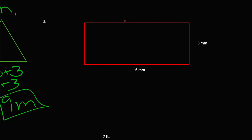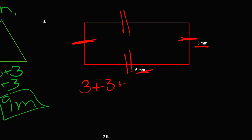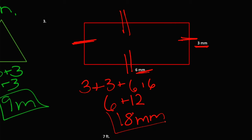And now we have the rectangle. Remember, the rectangle only has two different side lengths — this one and this one are the same, and this one and this one are the same. So we know that there are two 3s, making it 3 plus 3 plus 6 plus 6. 3 plus 3 is 6, and 6 plus 6 is 12, and 6 plus 12 is 18. Since it's mm, which is millimeters, our perimeter is 18 millimeters.